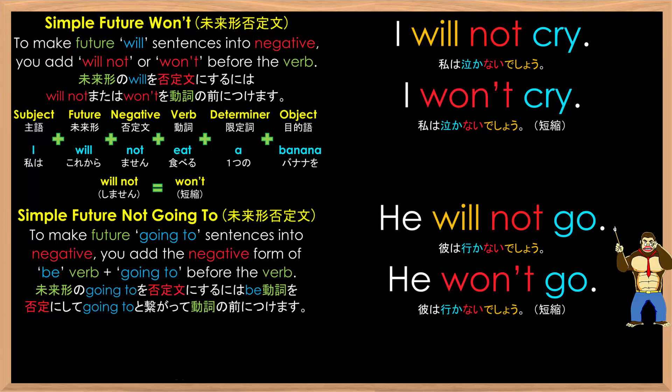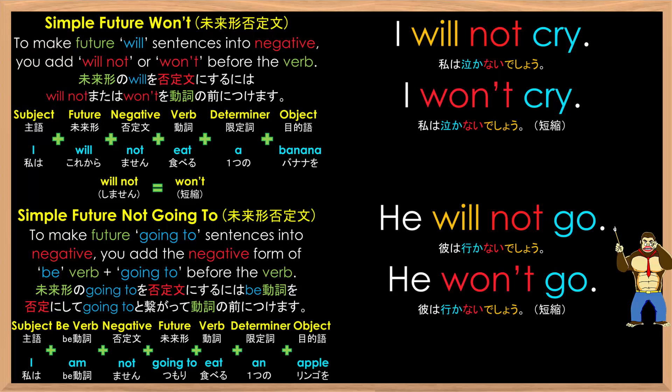To make future going to sentences into negative, you add the negative form of be verb plus going to before the verb. As in: I am not going to eat an apple. You can see between the subject I and the verb eat, we have am not going to. It's very long.